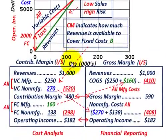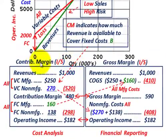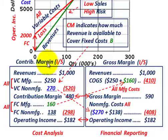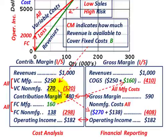Let's look at the comparison laid out in income statement format. The contribution margin method is shown on one side and the gross margin method on the other side. Again, the contribution margin is used in cost analysis and the gross margin in financial reporting. For both, we start with revenues and determine operating income after subtracting variable costs and fixed costs.